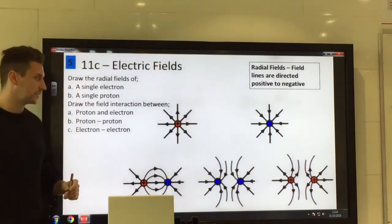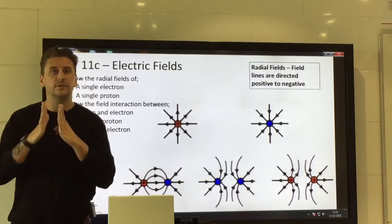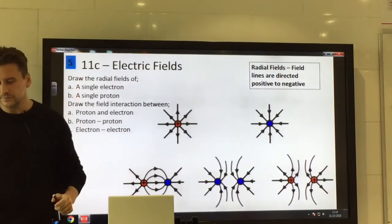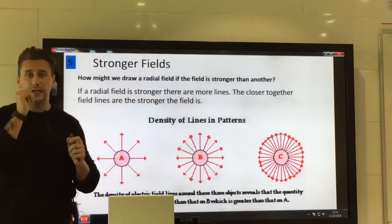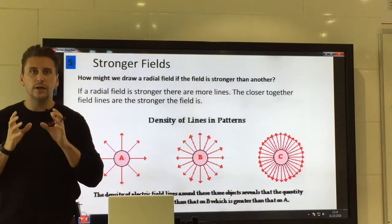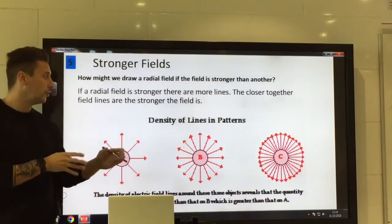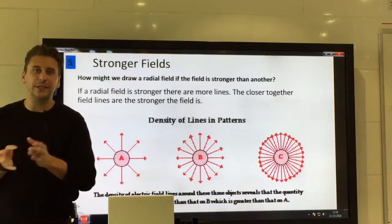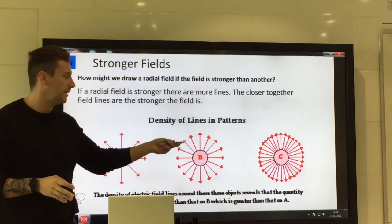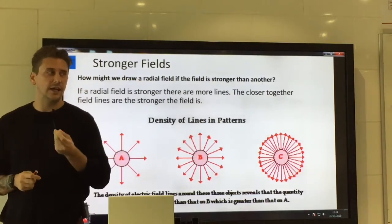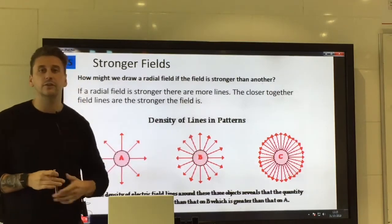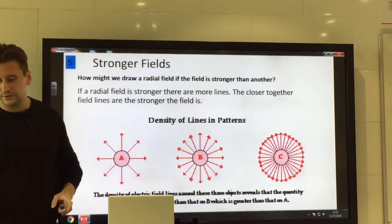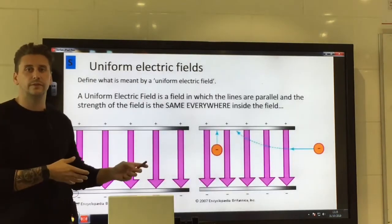Exactly the same applies for two positive radial fields — they deflect and won't cross, with arrows pointing outward for the proton. One other thing you need to be able to do: if the exam asks you to draw or describe how a field would look if it were stronger than another, you simply draw more field lines. A higher density of field lines on the diagram represents a stronger field, which would correspond to a greater charge, for example.